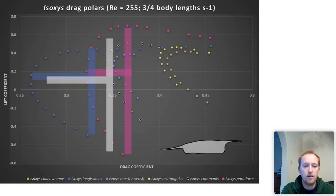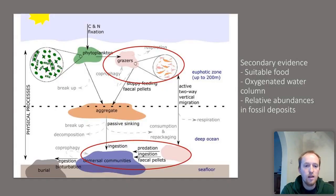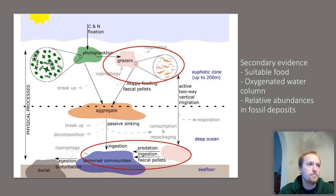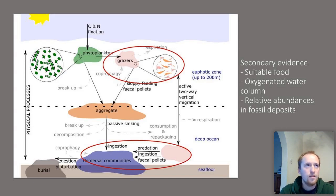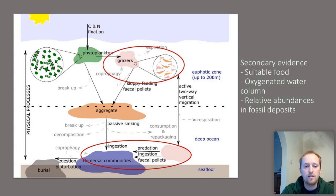Plotting the *Nectocaris* data onto the drag polar, we see broad coverage of the same area — supporting the comparison. Do we have other evidence? There's suitable food in the surface oceans in the form of small crustaceans and smaller shelly fossils showing small arthropods entering the pelagic realm at this time. In fossil deposits, the least hydrodynamic taxa interpreted for a benthic lifestyle are far more abundant in the Burgess Shale and Chengjiang Biota than vertically migrating candidates like *I. paradoxus* and *I. longissimus* — providing corroborating evidence beyond the hydrodynamics.